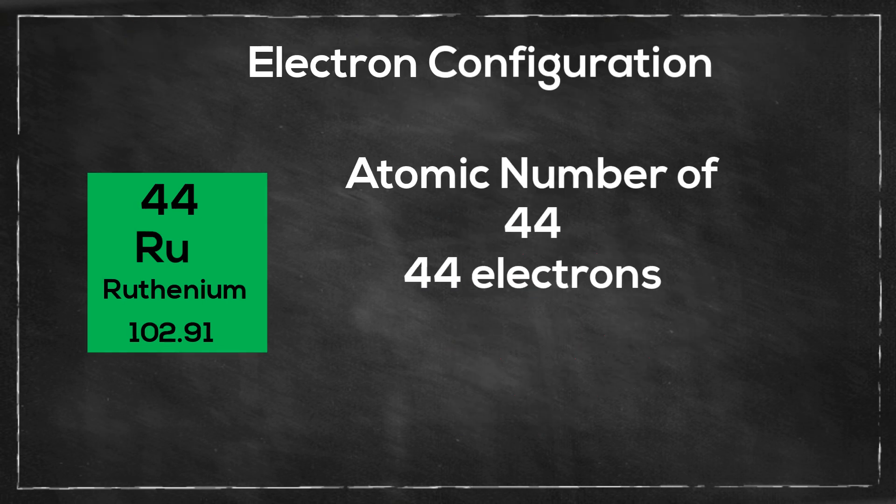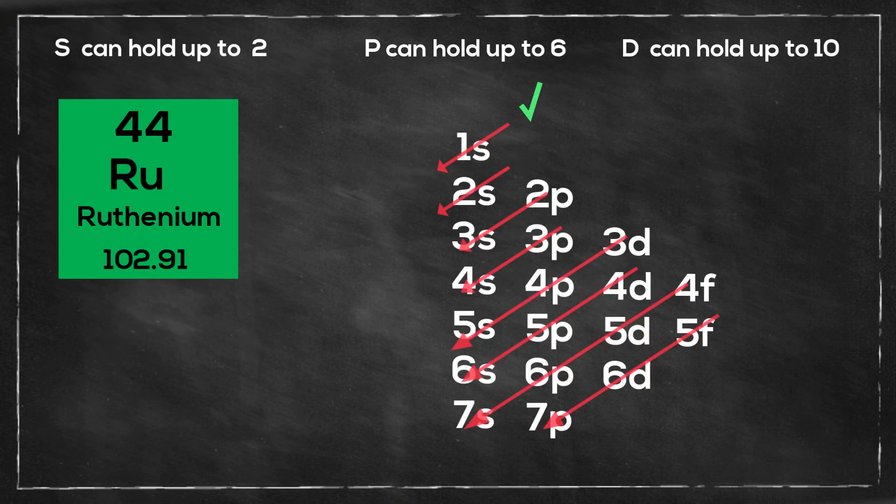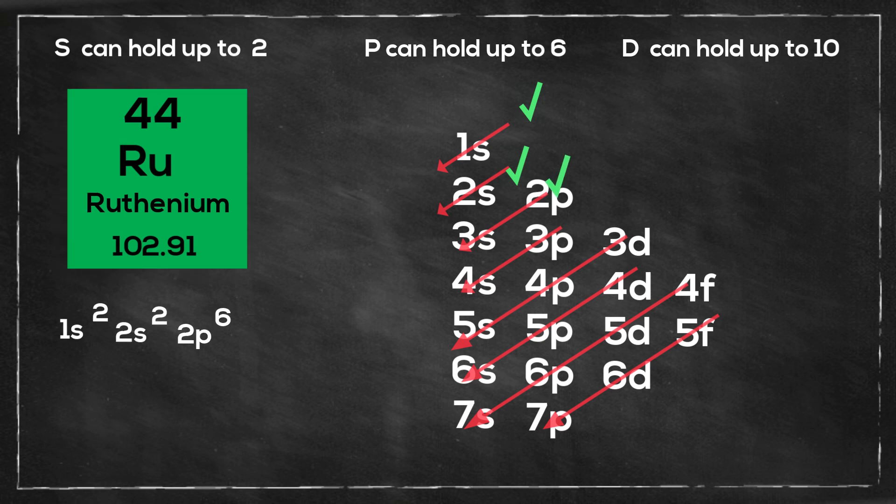Okay, let's get started. First, ruthenium has an atomic number of 44, so it has 44 electrons. So I will begin at 1s, so it will be 1s2, then I move to 2s2, then 2p6, then 3s2, then 3p6, then 4s2. That gives me up to 20.